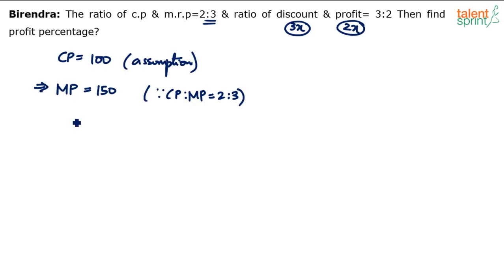Find the profit percentage is the question. We know that selling price is equal to cost price plus profit, or it is also equal to marked price minus discount. So I can say cost price plus profit—100 plus how much is the profit? 2x—equals to marked price 150 minus how much is the discount? 3x.